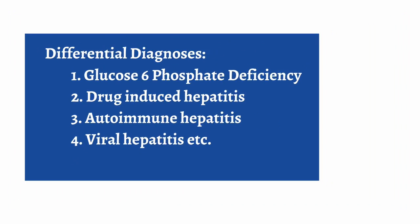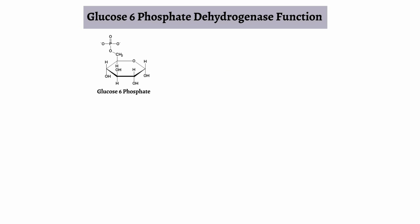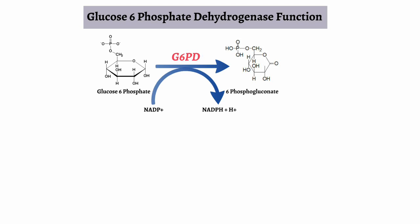Before we can talk about this very common disorder, we need to understand how the enzyme glucose-6-phosphate dehydrogenase works. G6PD is an enzyme that plays a vital role in the pentose phosphate pathway and helps cells fight off oxidative damage. G6PD removes two hydrogen atoms from glucose-6-phosphate to create 6-phosphogluconate. These hydrogen atoms are transferred to NADP to create NADPH plus a hydrogen atom.